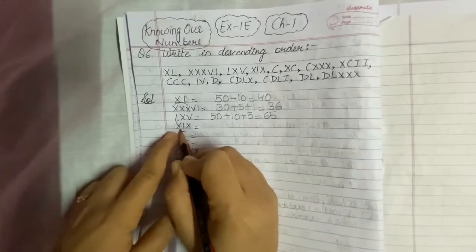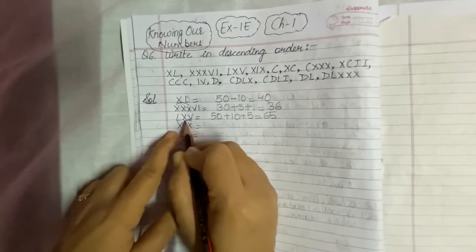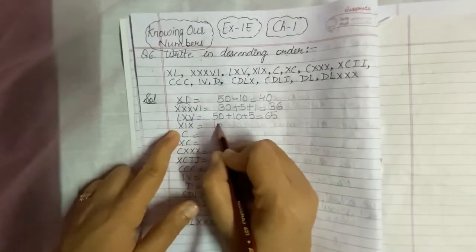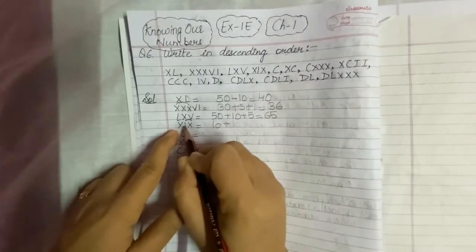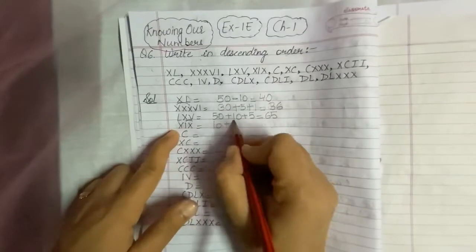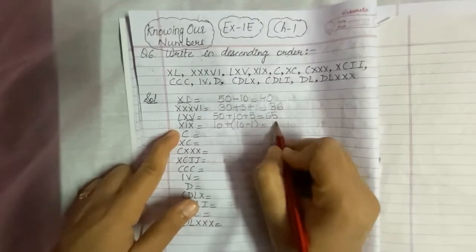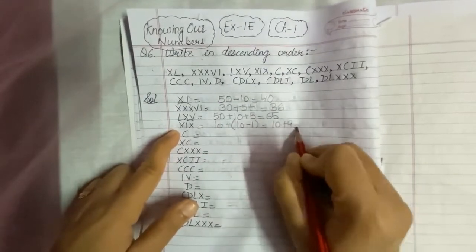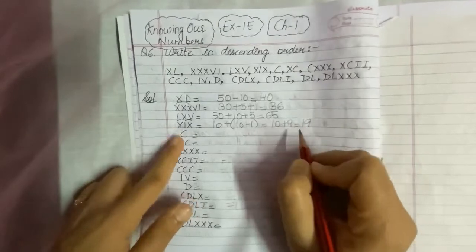Next is XIX. X means 10, and IX means 10 minus 1, which is 9. So 10 plus 9 gives us 19.